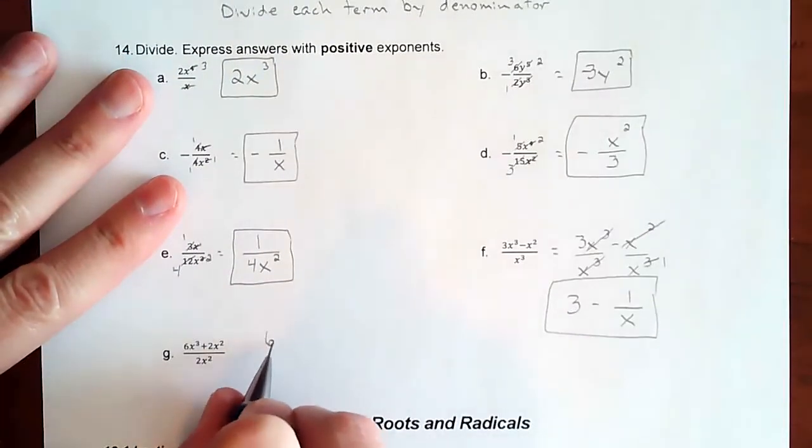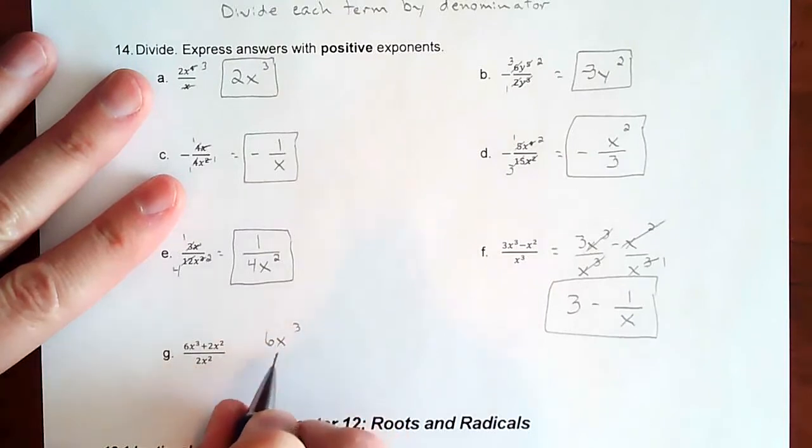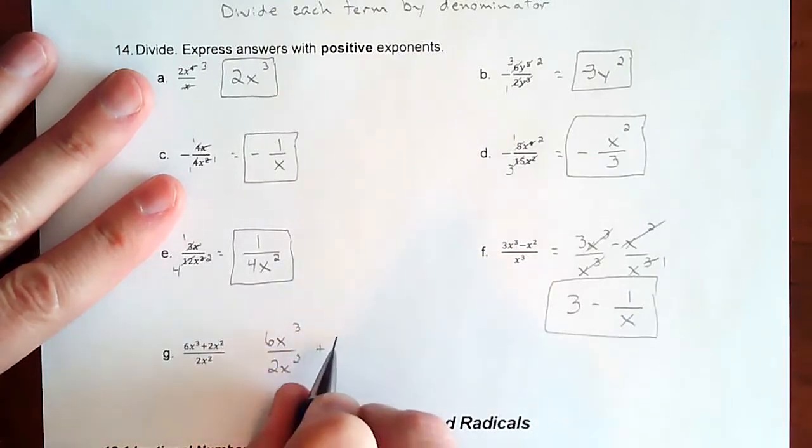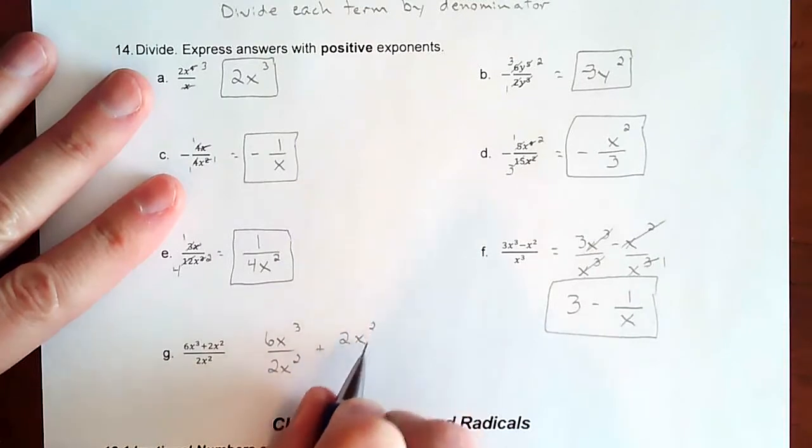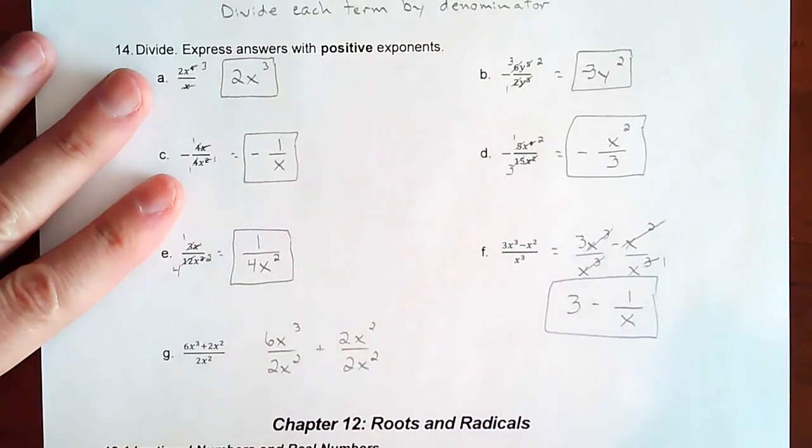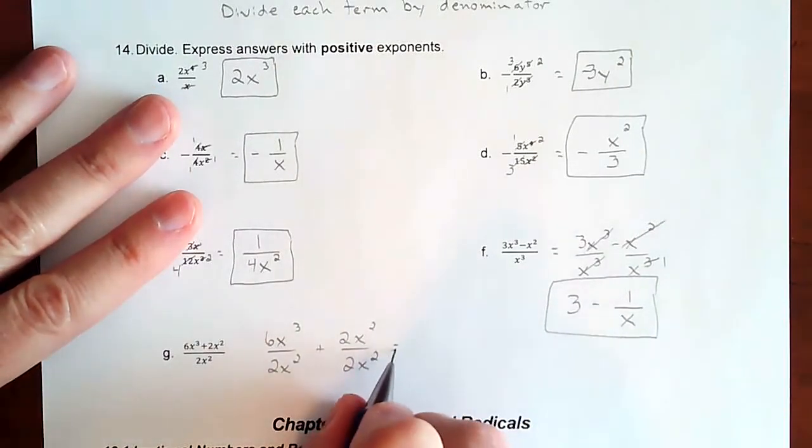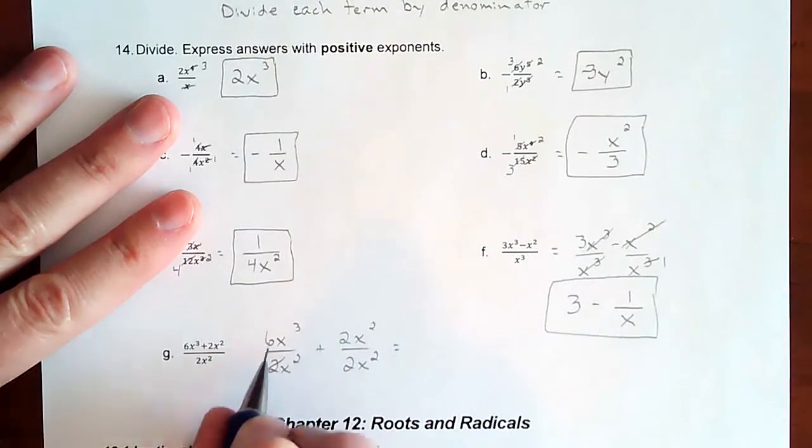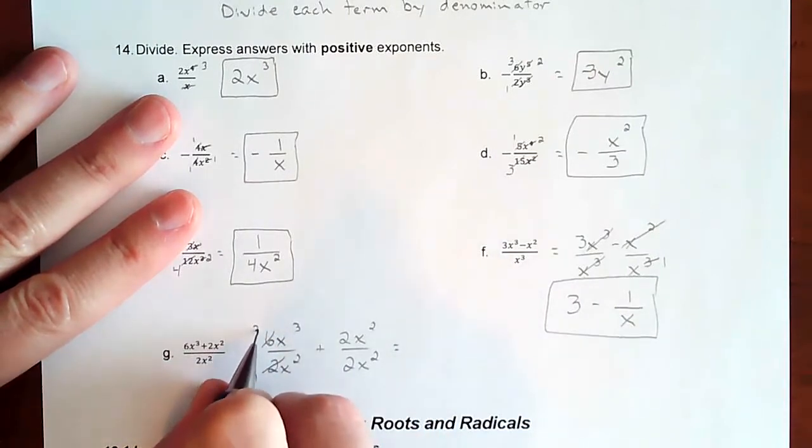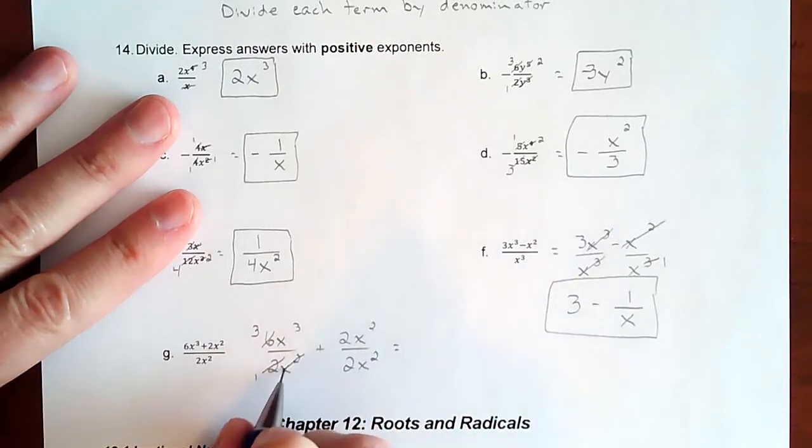So we're going to take six X to the third. We're going to divide that one by two X squared plus two X squared divided by itself. So if you have that one, the two is going to divide into the six. Two goes into two one time, two goes into six three times. Two of those X's will cancel two of those X's and leave you with the one.